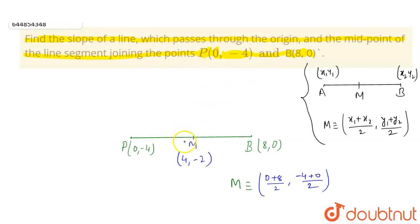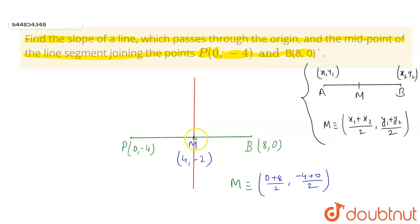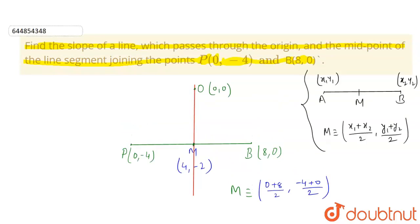Now we need to find a line which passes through the midpoint of PB — that is, through point M — and also passes through the origin, which is (0, 0). We have to find the slope of this line.